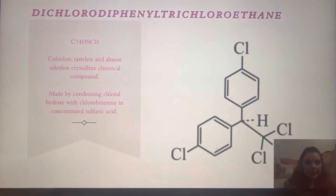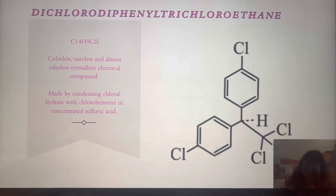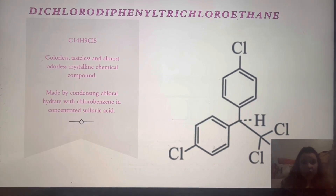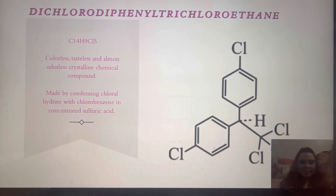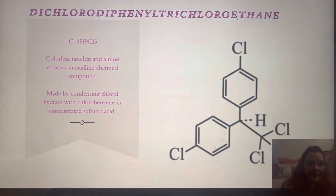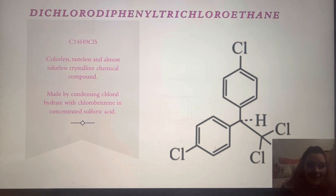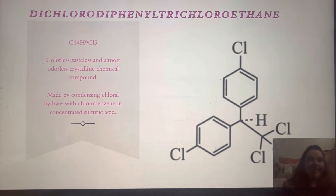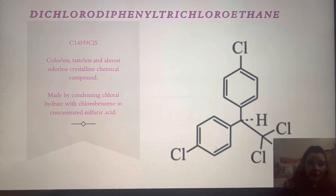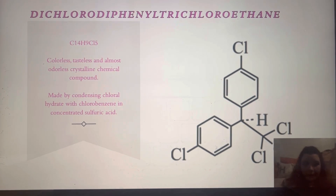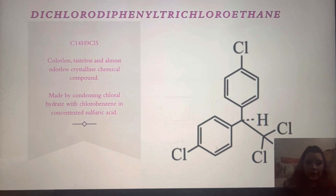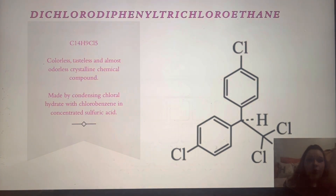DDT stands for dichlorodiphenyl trichloroethane. Its chemical structure is carbon-14, hydrogen-9, and chloride-5. It is a colorless, tasteless, and almost odorless crystalline chemical compound, and it was made by condensing chlorohydrate and chlorobenzene with concentrated sulfuric acid.